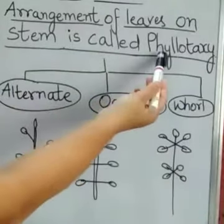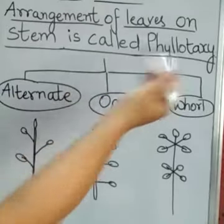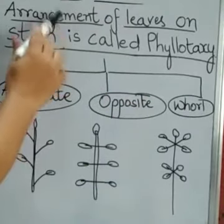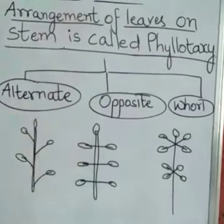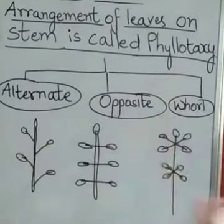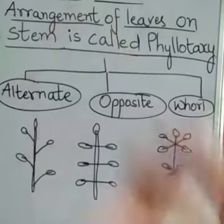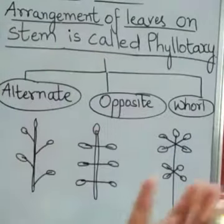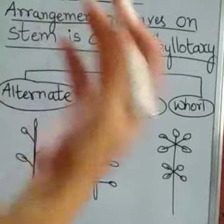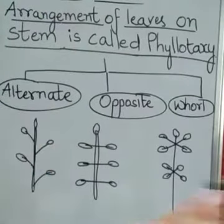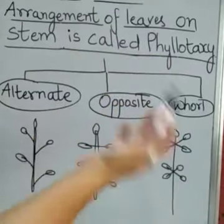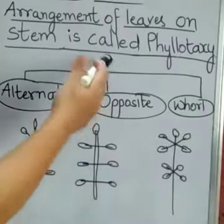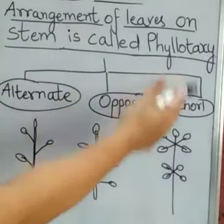Phyllotaxy — 'phyllo' means leaf and 'taxis' means arrangement. So the arrangement of leaves on a stem is called phyllotaxy. There are many plants around us, and all the plants are different from each other. The arrangement of leaves on different plants is different, and there are mainly three types of arrangement.